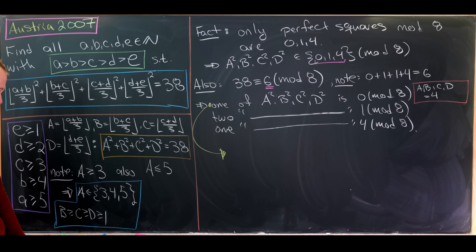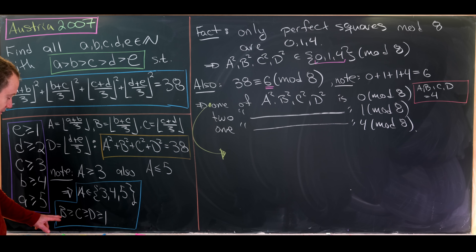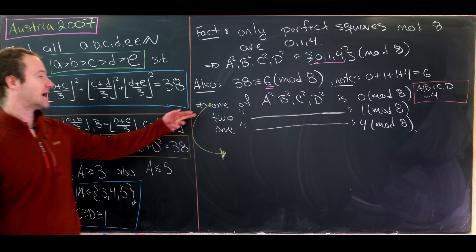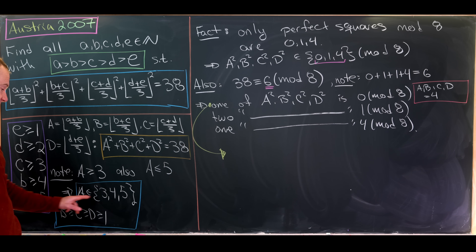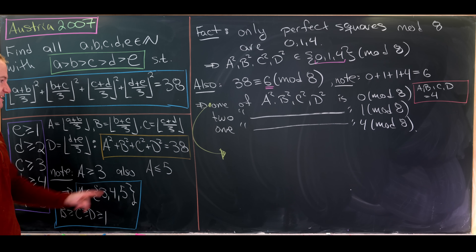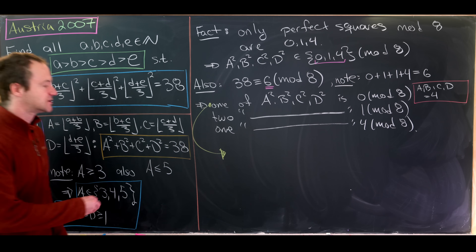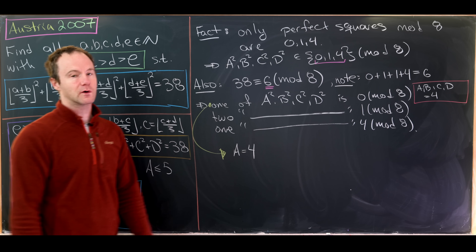Which one equals 4? It's possible for capital A to equal 4. If capital B were equal to 4, that would make two of the terms 0 mod 8. Also, capital A must be bigger than or equal to capital B, so capital A would have to be 5, but then A² + B² = 25 + 16 = 41, which is already too large. So capital B cannot be 4, meaning capital A must equal 4.